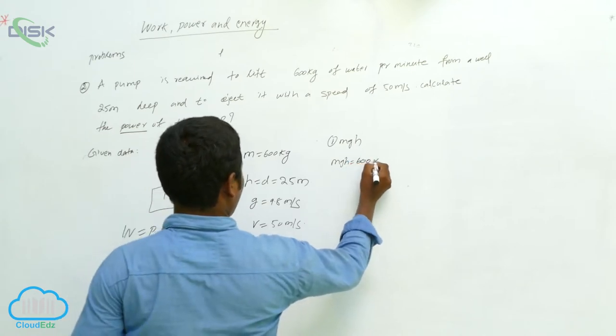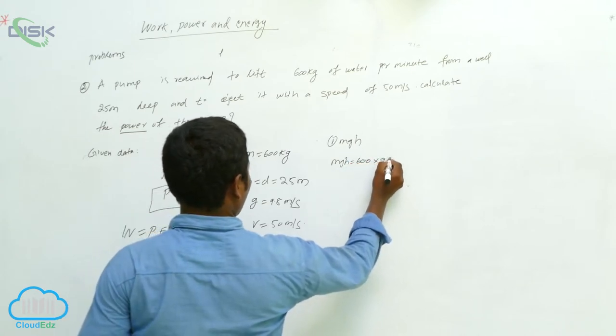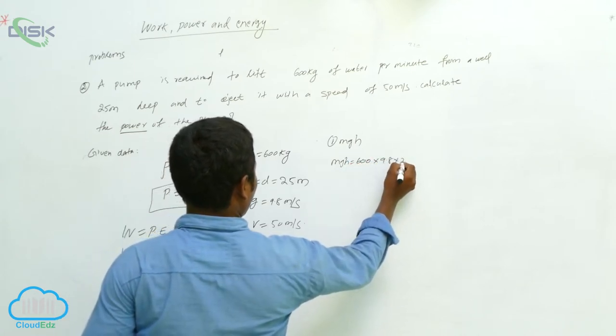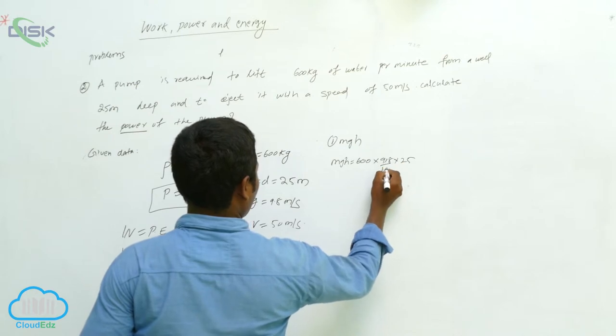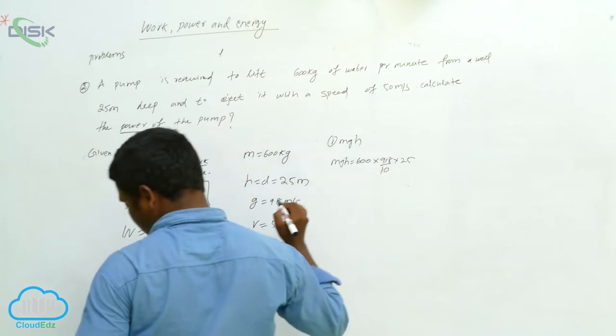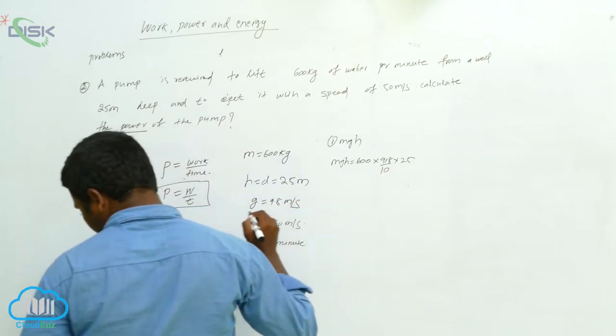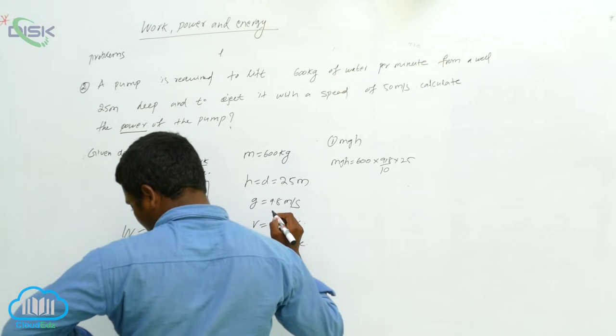mgh equals 600 into 9.8 into 25. Multiply these values to get the mgh value.